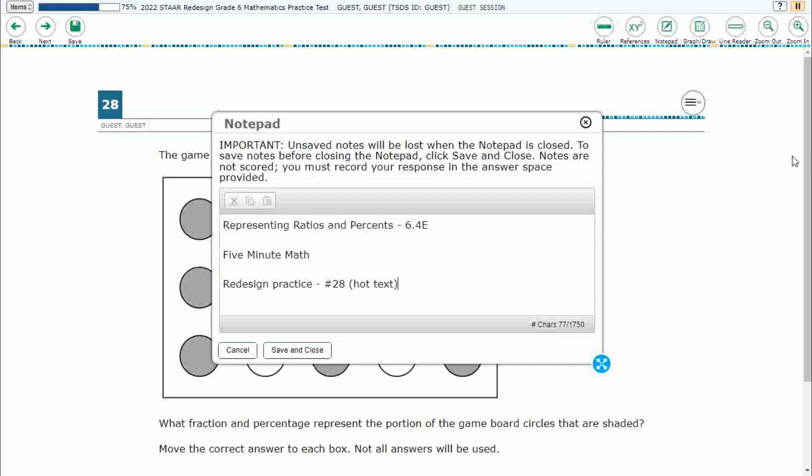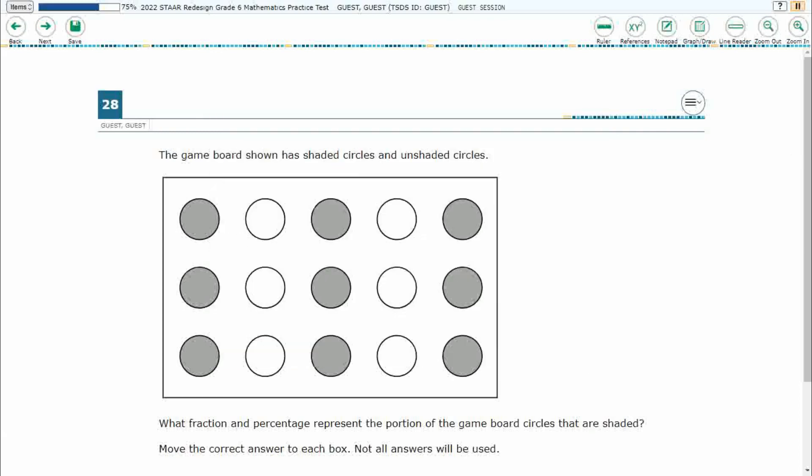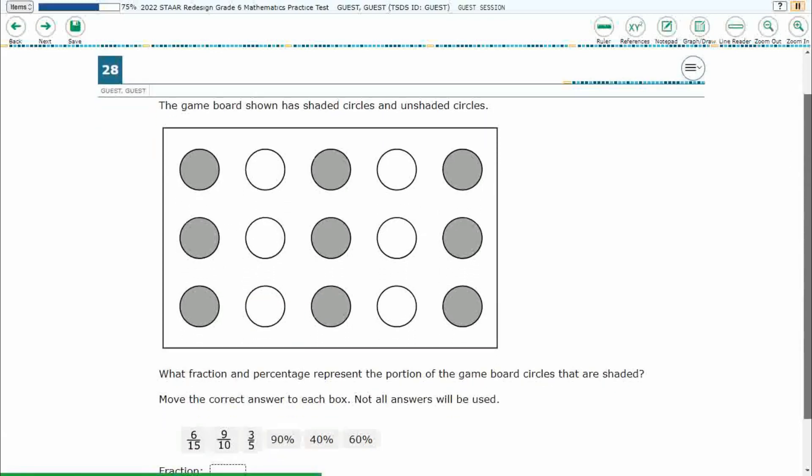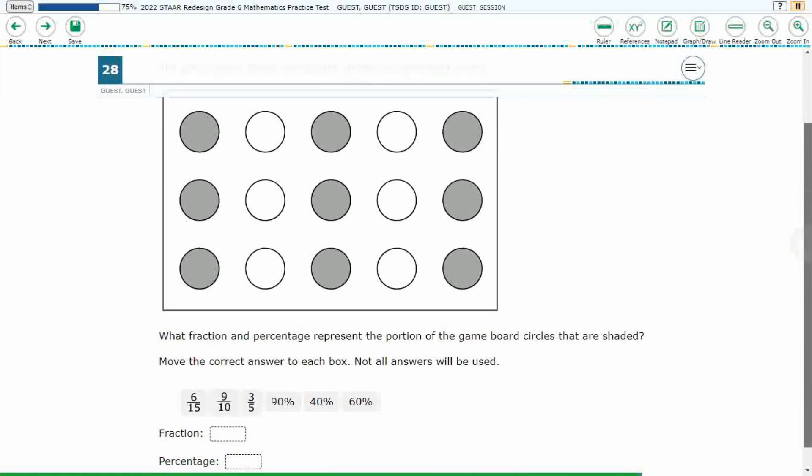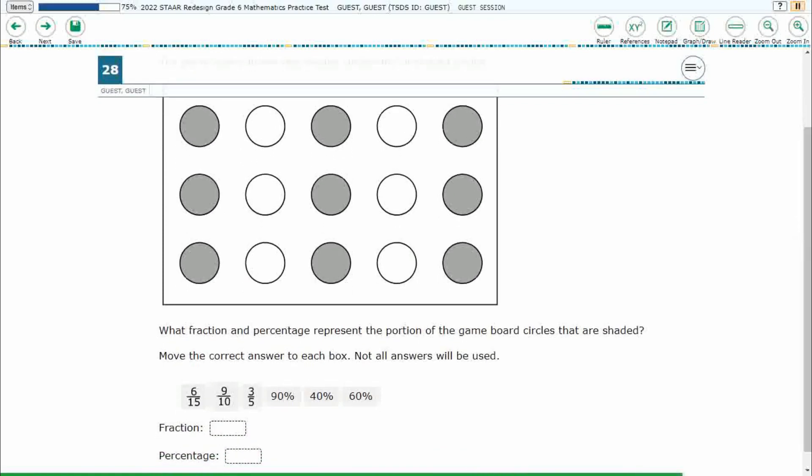Hello and welcome to 5-Minute Math. Today we are looking at the sixth grade concept of representing ratios and percents. This is standard 6.4e in the great state of Texas, and we are using item number 28, which is a new item type called hot text off the Redesign Practice Online Star Test. If you haven't done so already, please go ahead and take a moment to pause the video, work this problem out on your own, unpause it, and we will look at our answers together.